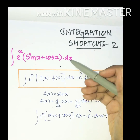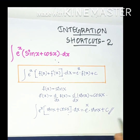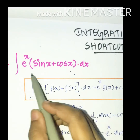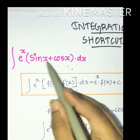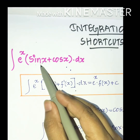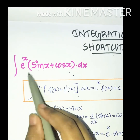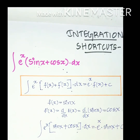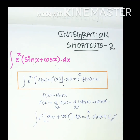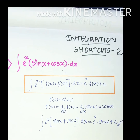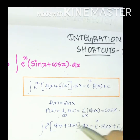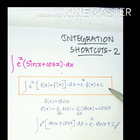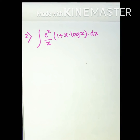Using these shortcuts you can solve problems within seconds. Remember: the question must be in the form of eˣ into [f(x) + f'(x)], where the differentiation of f(x) appears alongside it. Here, differentiation of sin x is cos x. The answer is eˣ·f(x) + C. Solving it normally via multiplication, splitting, and the UV method would be very long.